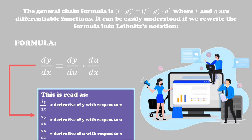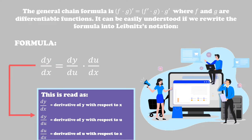It can be easily understood if we rewrite the formula into Leibniz's notation. The formula is: the derivative of y with respect to x equals the derivative of y with respect to u times the derivative of u with respect to x.